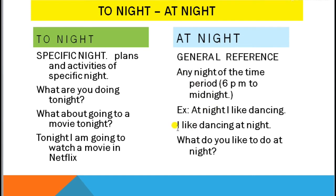Another example: 'I like dancing at night.' We can use 'at night' at the beginning or at the end of the sentence. Another example: 'What do you like to do at night?' — this refers to a general activity you do on any night in a week or in a month.